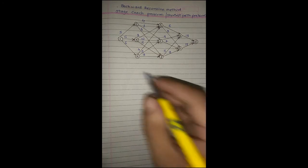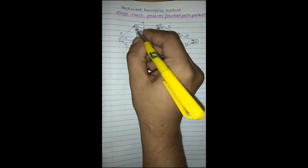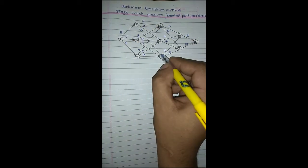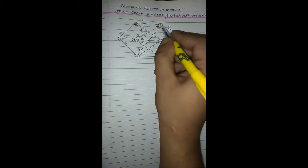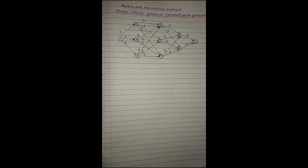There are various paths. If the traveler chooses city 1 to city 2, then he has 3 options: 2 to 5, 2 to 6, or 2 to 7. If he goes to 5, he has 2 options: 5 to 8 and 5 to 9, and then 8 to 10 or 9 to 10. There are various ways to reach city 10, but using dynamic programming and the backward recursive method, we have to find the shortest path with minimum total travel time.